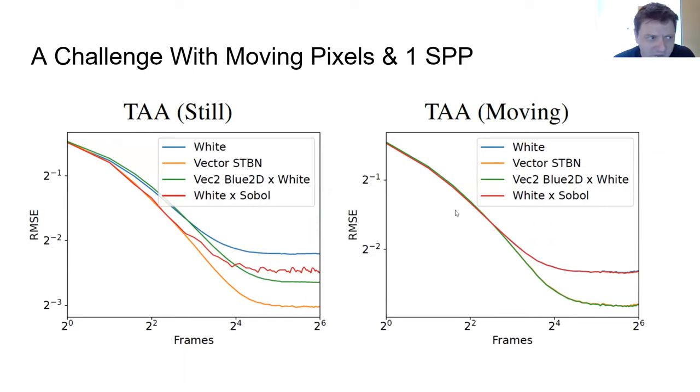If that pixel moves that means that it's using a different sampling sequence and if it's moving every frame what it amounts to is that that pixel ends up being white noise over time. And when that happens our noise decays just to 2D blue noise. It does no worse as you can see in these graphs. So on the left we have a still rendering where our spatiotemporal blue noise is in orange and regular 2D blue noise is in green. You can see we do better.